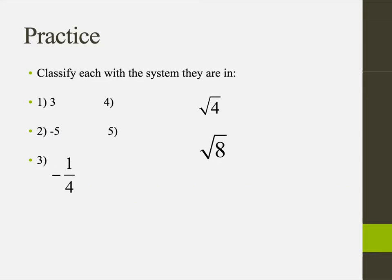So here we're going to classify each number in the most specific family it belongs to. For example, the first one: 3. Well, everything's part of the real numbers, but most specifically it would be natural. Remember, those are the ones that are like 1, 2, 3, 4, 5, so on and so forth. So it would be in the natural numbers, whole numbers, integers, rational, and real.